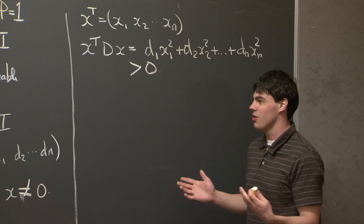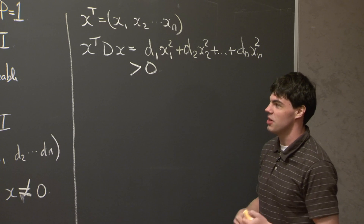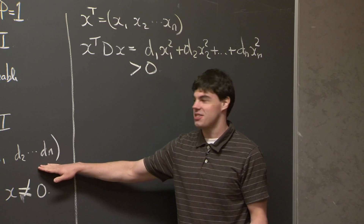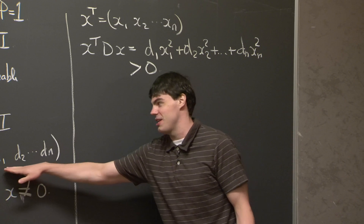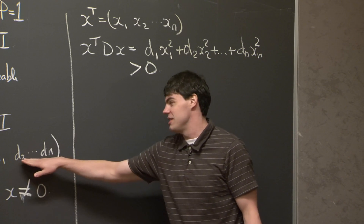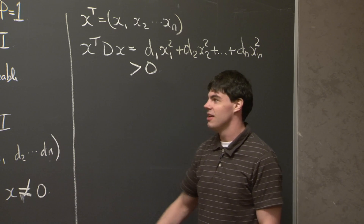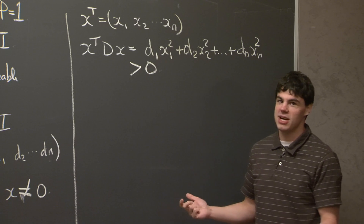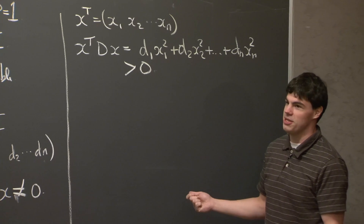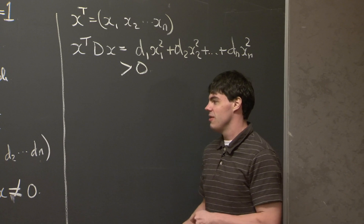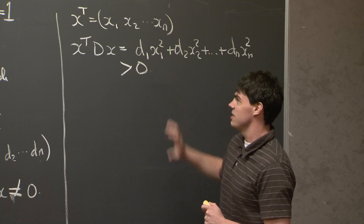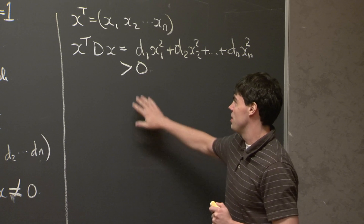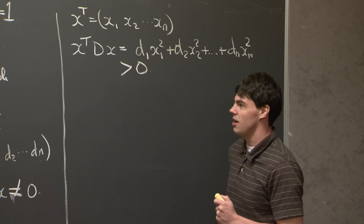There are other more efficient ways of getting at this. For example, if we're given a diagonal matrix, we know its eigenvalues are already D1, D2, ..., Dn. And we know that a matrix with all positive eigenvalues is already positive definite. But the direct computation is a good way to show it from first principles.